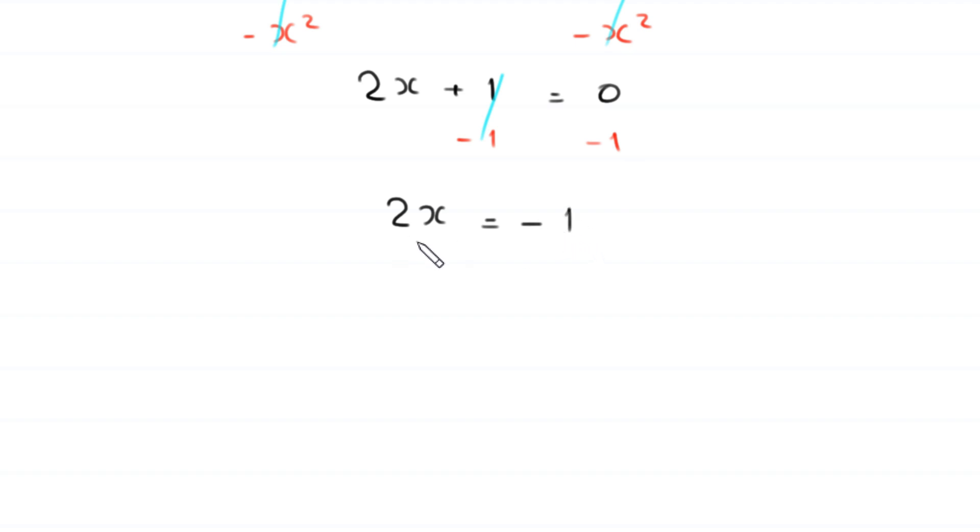From here we divide both sides of this equation by 2. So, this 2 gets cancelled with this 2, and we get the value of x equals negative 1 over 2.